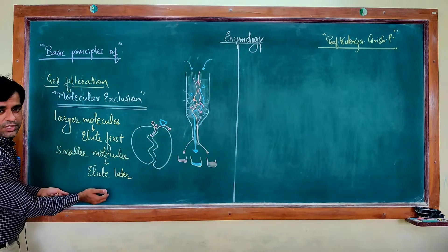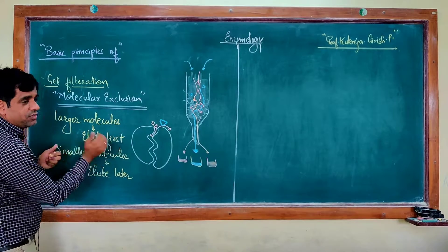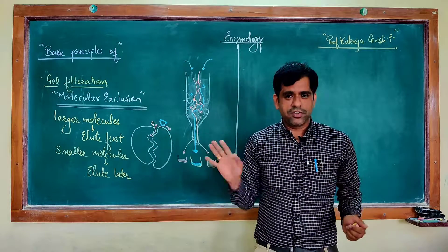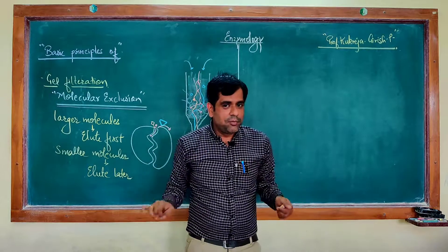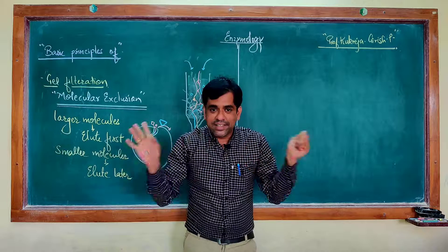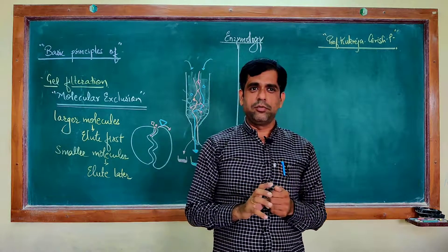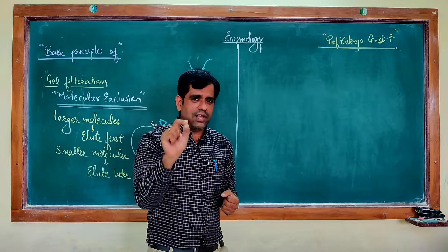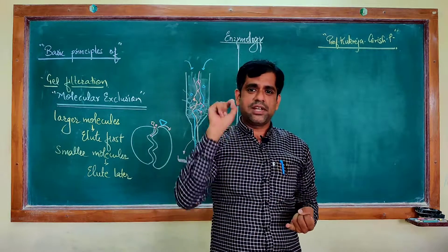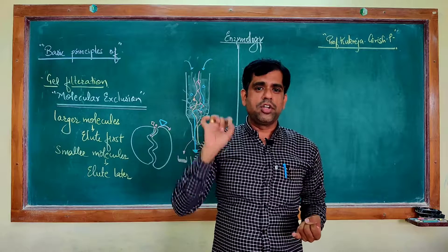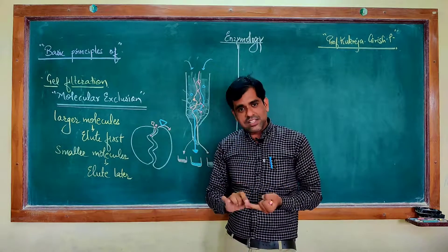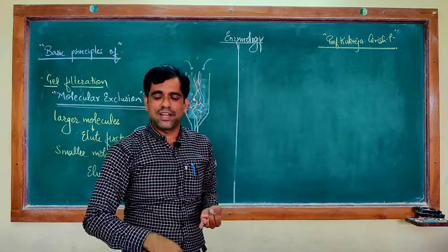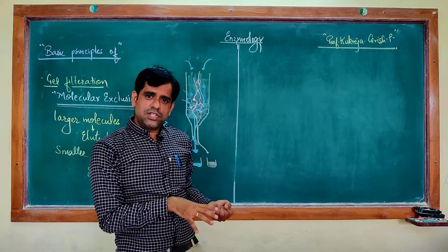So the smallest molecule will come out later and the larger molecule will come out first. This is the basic principle of gel filtration chromatography. The points to remember: gel filtration separates molecules based on their molecular weight or molecular size. The larger molecules elute out first and the smaller molecules come later.